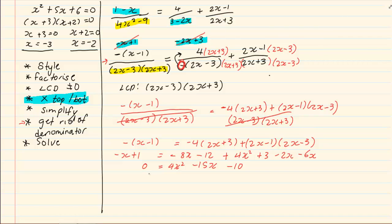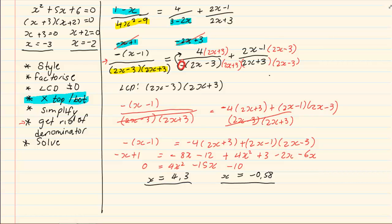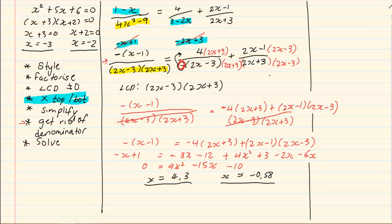Using the formula we get x is equal to 4.3 and x is equal to minus 0.58. Factorizing is the bulk of most solve-for-x problems. The next method we have is the formula. We would use the formula when solving for x cannot be done through simple factors — like in this example, we had 4x squared minus 15x minus 10, and we couldn't find simple factors with 4 and 10 that would give us 15.